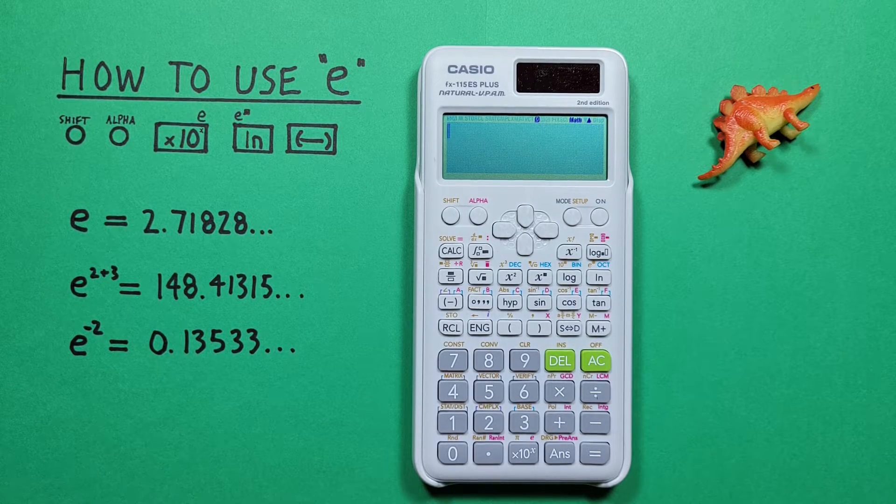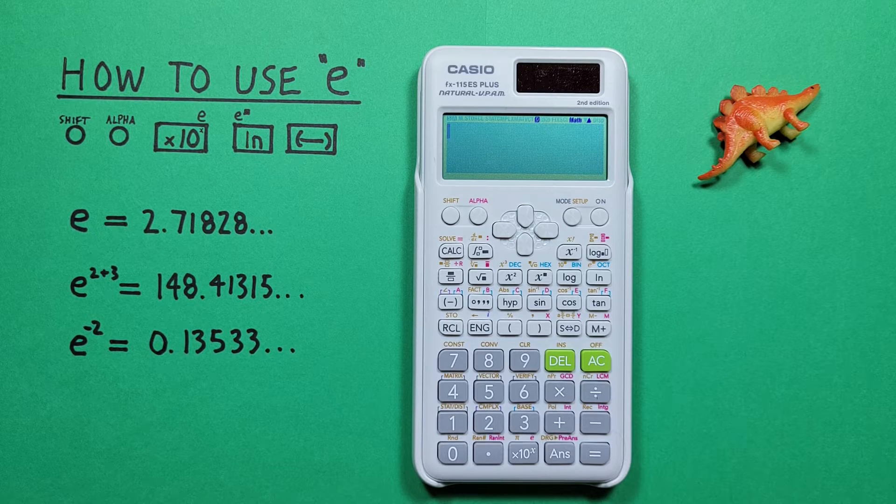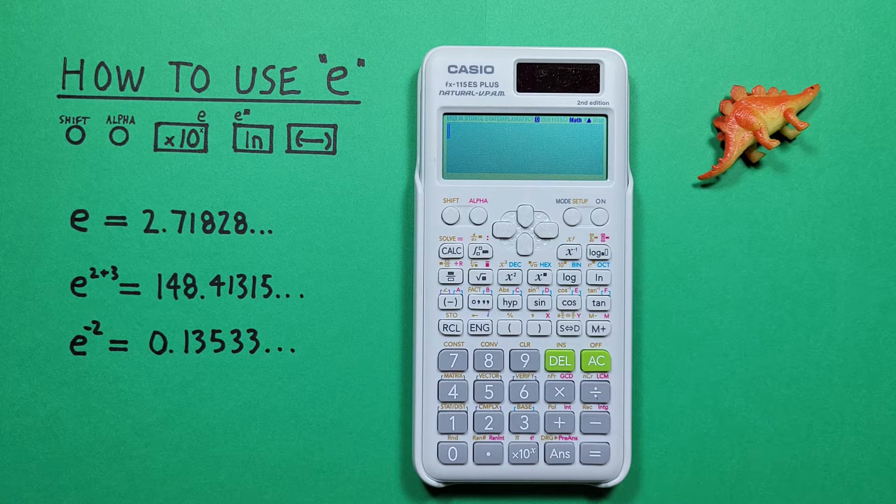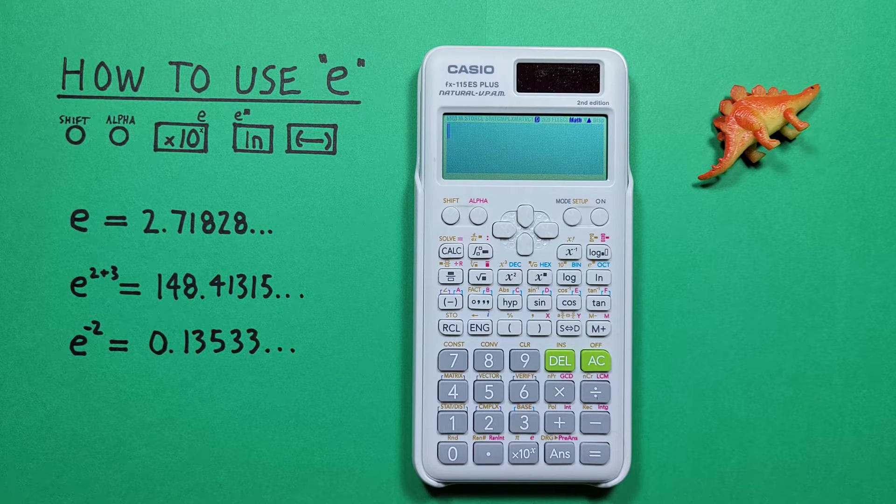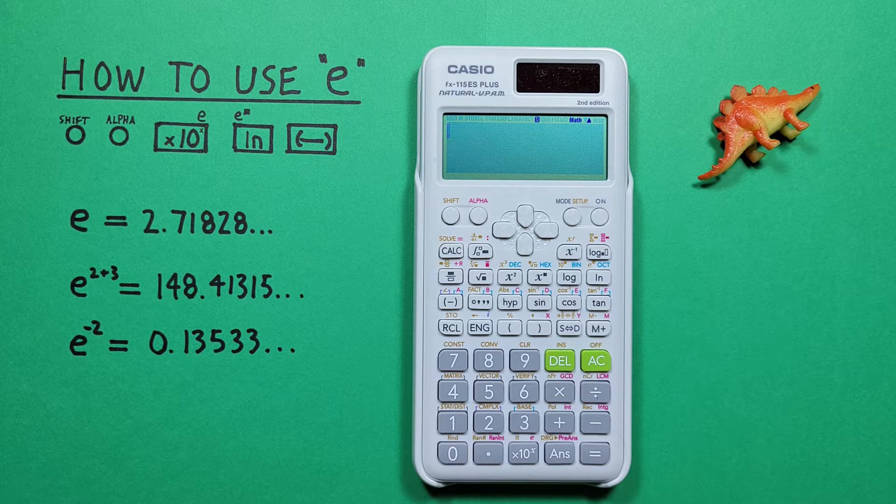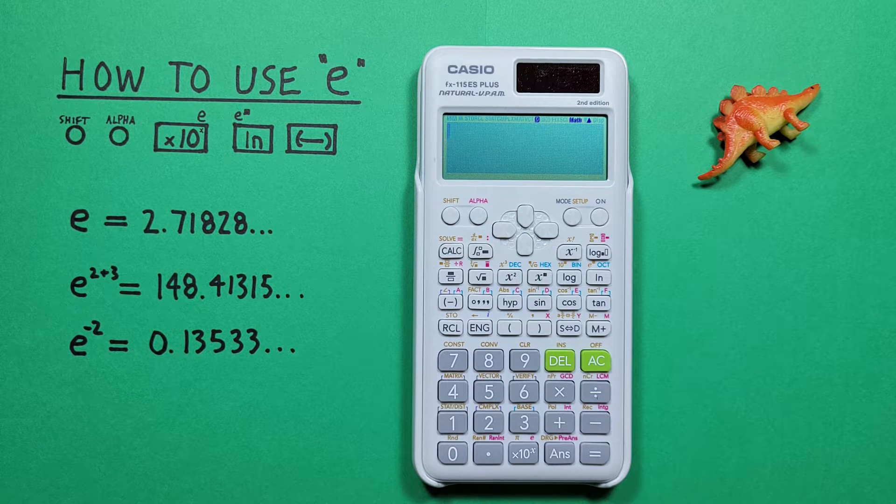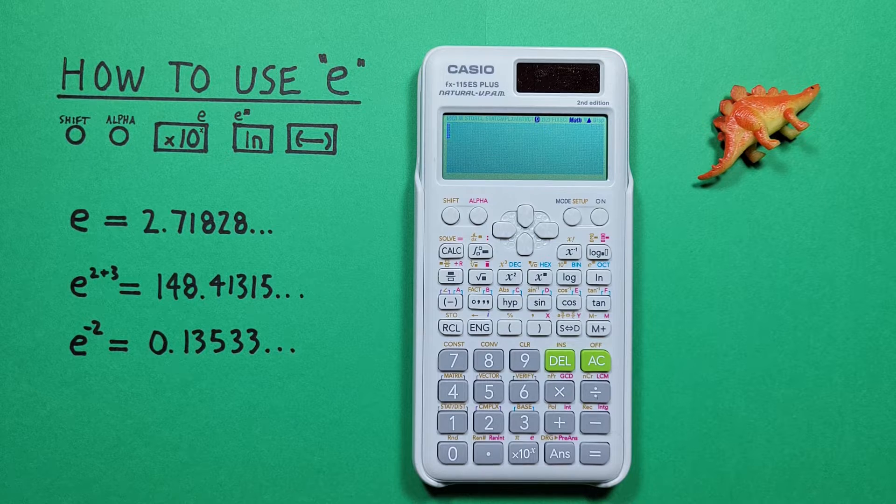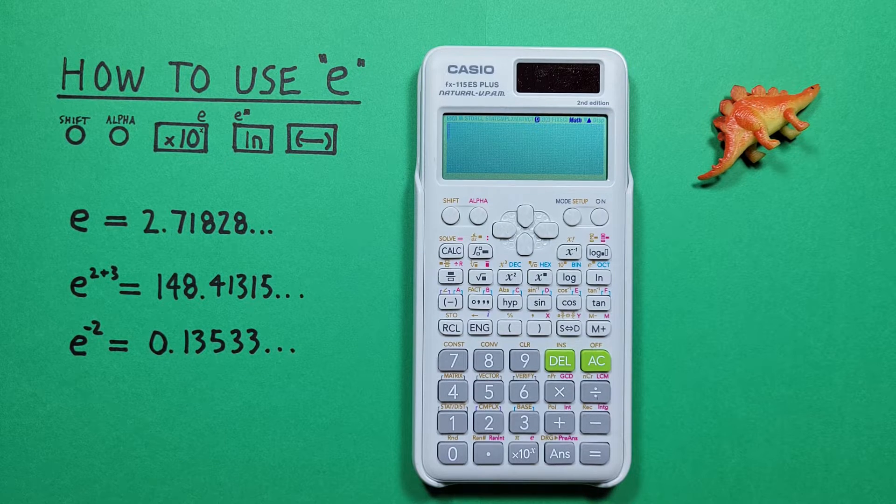Hey there and welcome to HD Calcs. I'm Rick, and in this video we're going to have a look at how we can use the function e, also known as Euler's number or the natural antilog, on the Casio FX-115 ES Plus calculator.